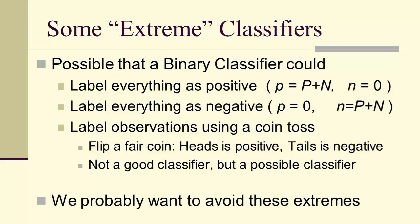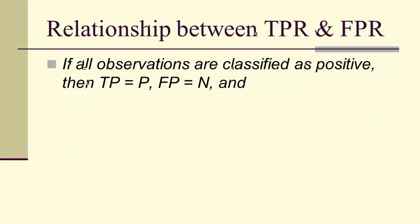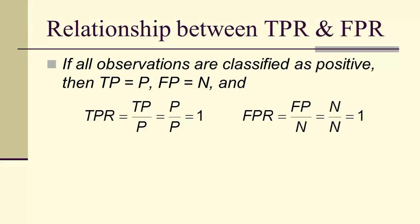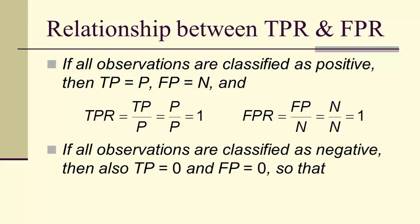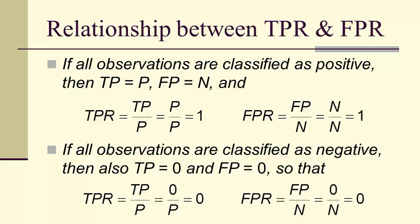The key idea is we probably want to avoid these extreme classifiers. We're going to look at the relationship between the true positive rate and the false positive rate. If all observations are classified as positive, the true positive rate is 1 and the false positive rate is 1. If everything is classified as negative, the true positives and false positives are both 0, so the true positive rate is 0 and the false positive rate is 0.